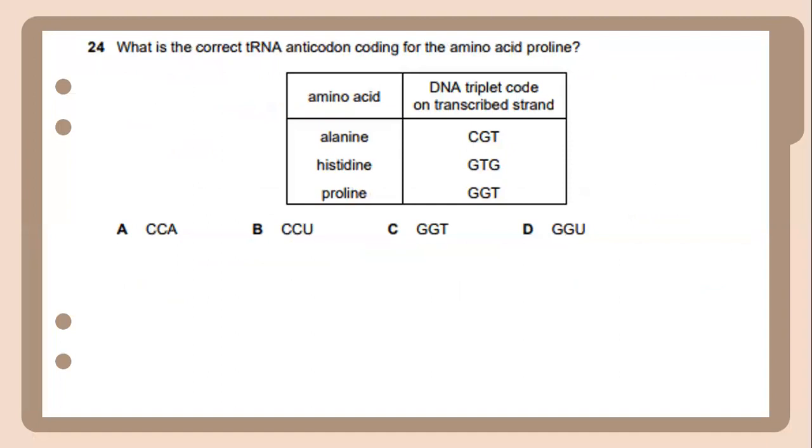Twenty-four. What is the correct tRNA anticodon coding for the amino acid valine? The answer will be the correct tRNA anticodon coding for the amino acid valine is GGC.